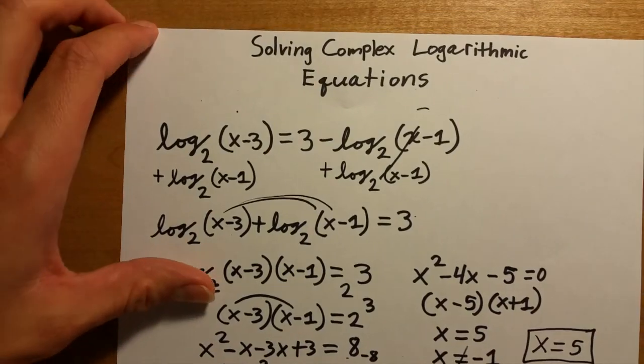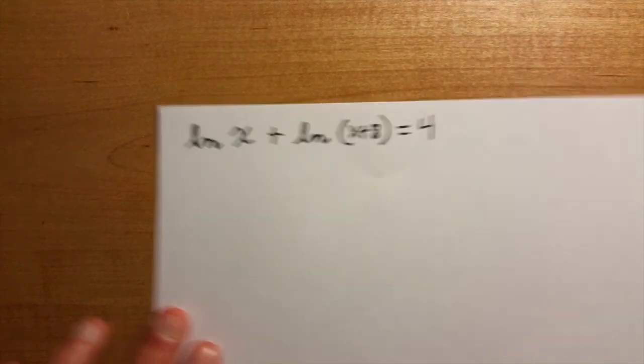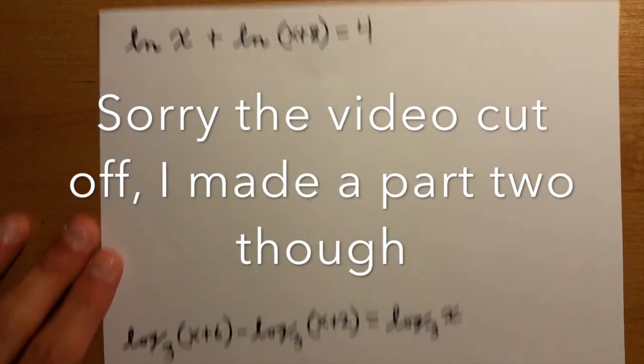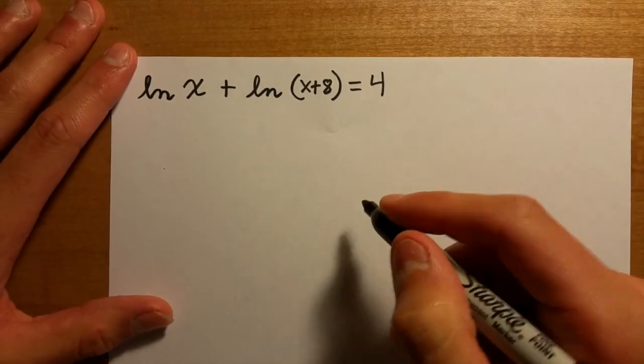And this one ended up only having one answer since it wasn't factorable. So that's it for the first two examples. And then we are also going to do these two—one's in natural log and the other one's in normal log.